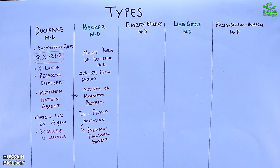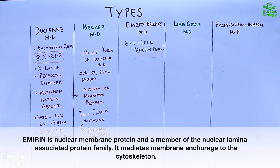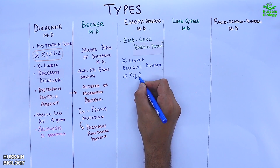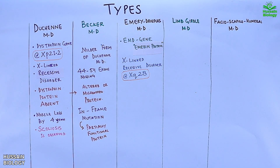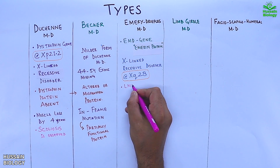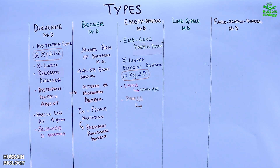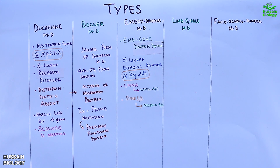Emery-Dreifuss muscular dystrophy is due to mutation of the EMD gene, which makes emerin protein. This is an X-linked recessive disorder with the gene located on the X chromosome at position Xq28. Other contributing genes include the LMNA gene, which makes lamin A or lamin C protein, and the SYNE gene, which makes nesprin protein. Emerin protein is expressed in both cardiac and skeletal muscle, so both will be affected by this disorder.